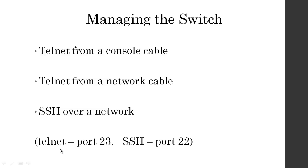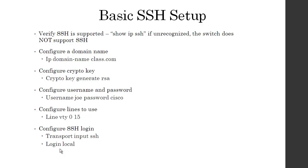With SSH you're doing a secure shell connection, so there have to be usernames and passwords. To check if your switch supports SSH, do show IP SSH — if the command is unrecognized, your switch doesn't support it. To configure SSH: first configure a domain name with IP domain-name (e.g., class.com). Then generate the crypto key: crypto key generate RSA. Configure username and password: username Joe password Cisco. Then configure the VTY lines: line VTY 0 15 (for all 16 lines). Transport input SSH, enter. Login local. You're all set.